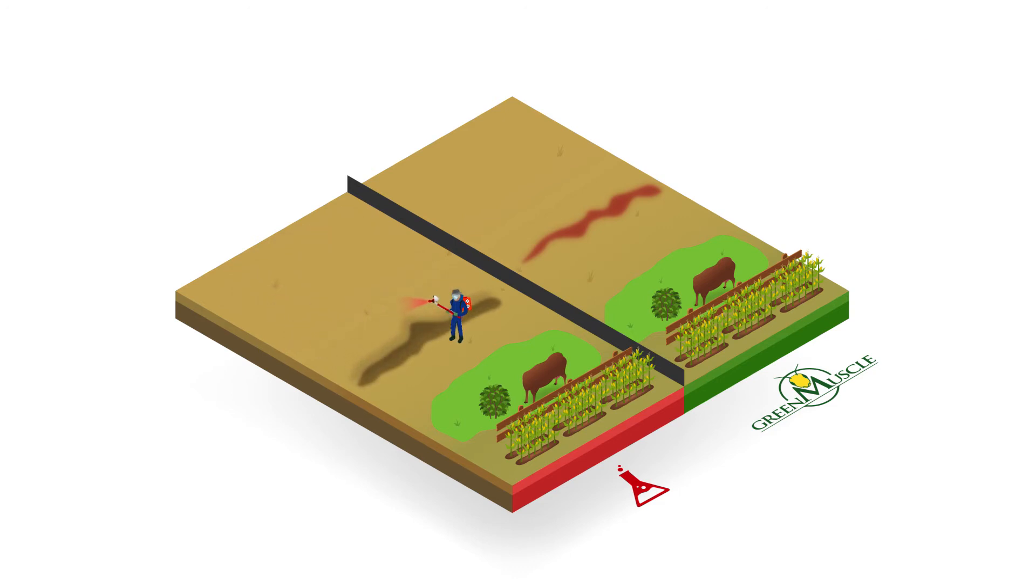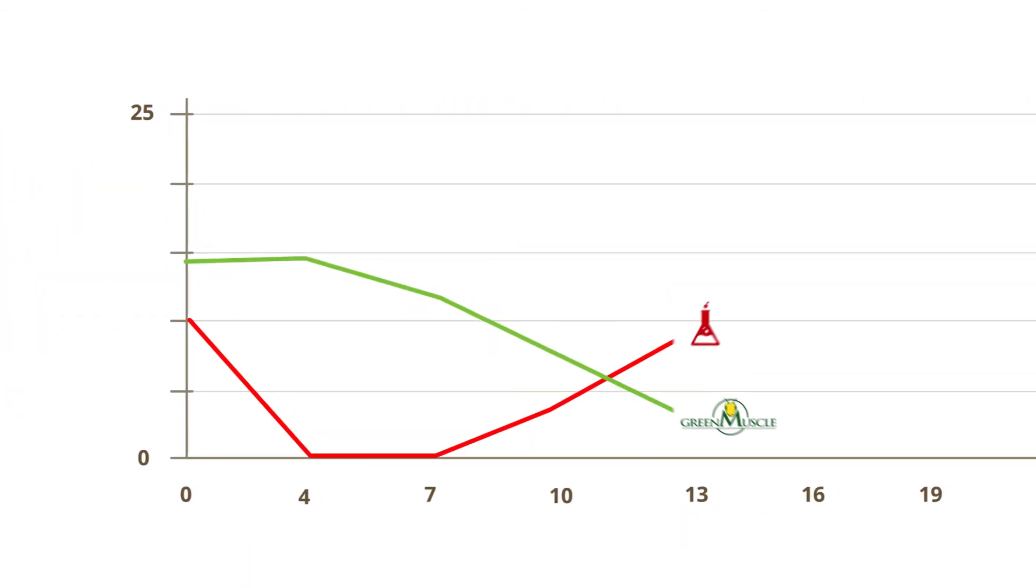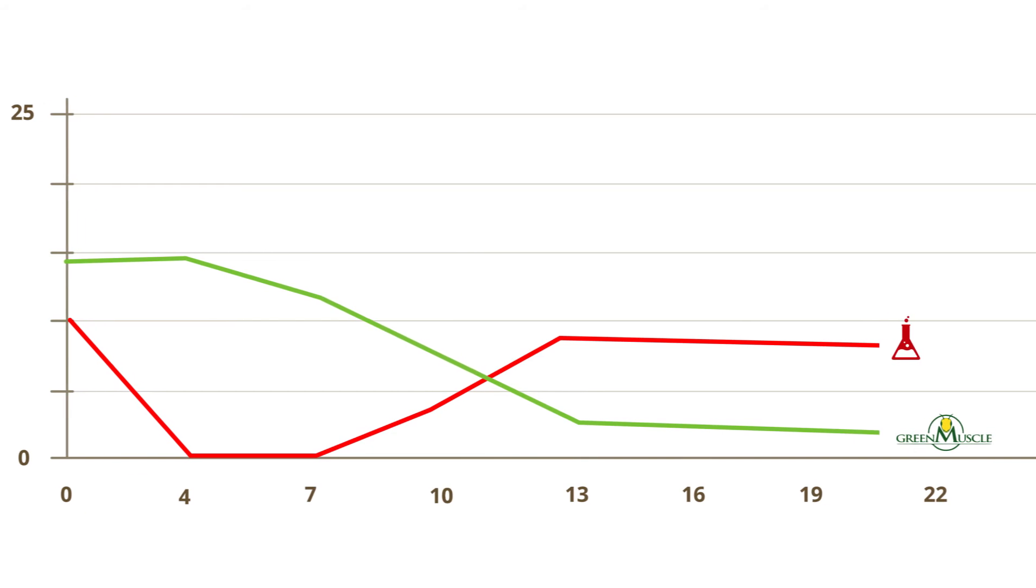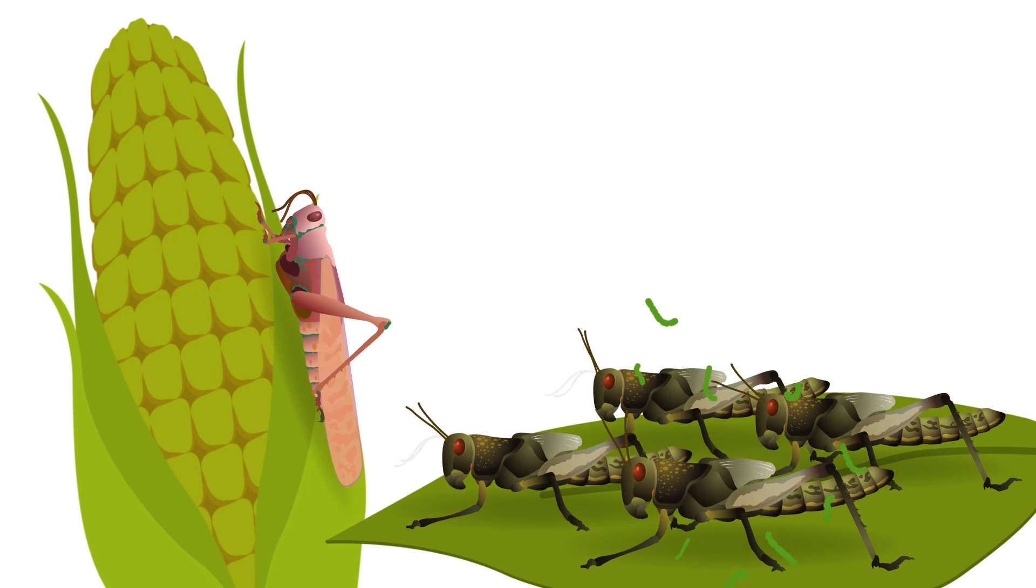In contrast, field trials show that while Green Muscle has a slower knockdown, it remains effective for more than 22 days. This means that new hopper bands entering the area become infected and are also controlled.